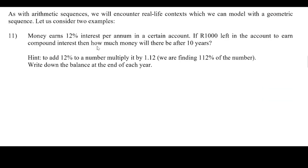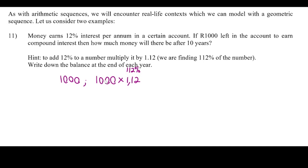As we did previously, we will also encounter real-life examples. Here money is earning interest at 12% per annum, and we want to find how much money there will be after 10 years. When we add 12% to a thousand rand we multiply by 1.12, because that represents 112% — finding 112% of a thousand rand grows it by 12%.